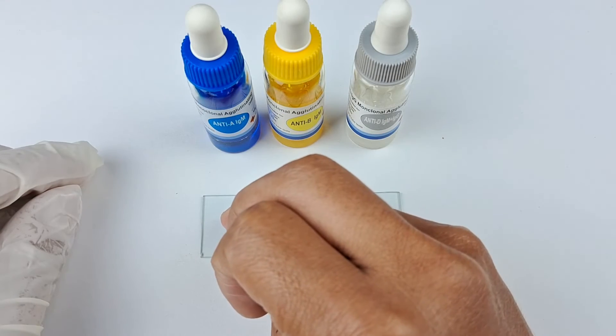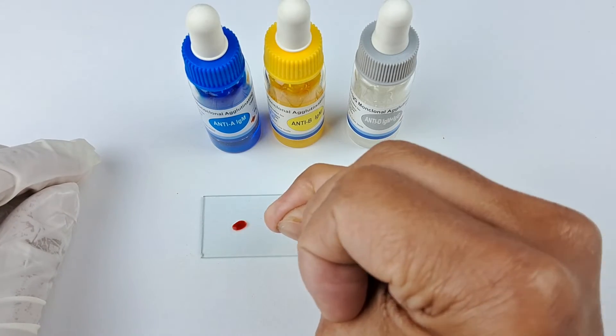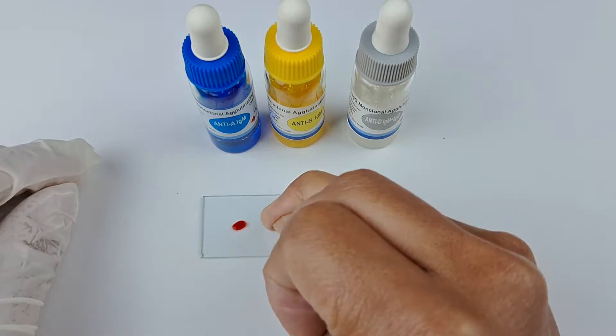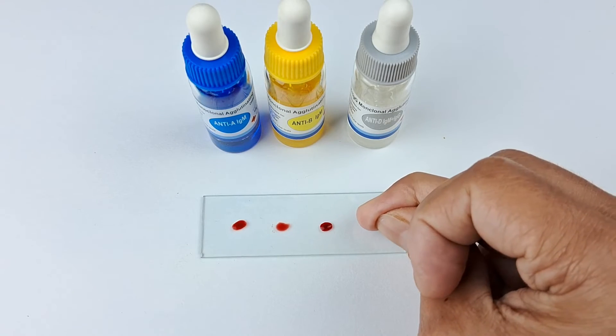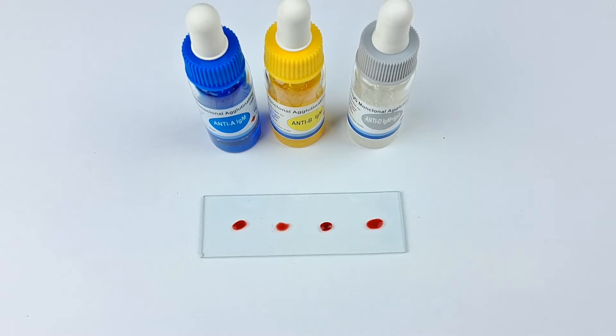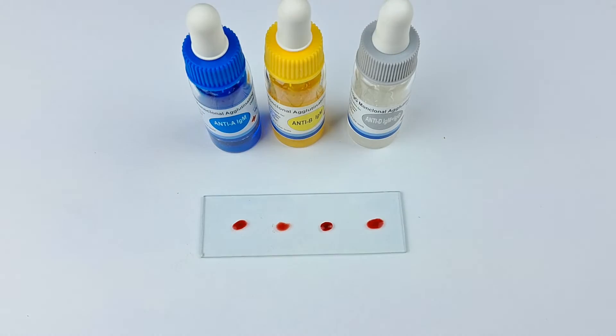Now gently place four drops of blood on the glass slide at more or less equal distances from each other. Do not place the two corner drops too close to the edges of the slide as it might pose some inconvenience when mixing later with the mixing stick.